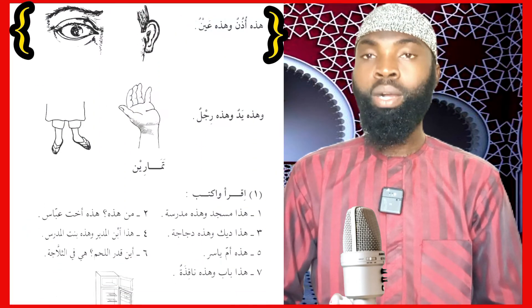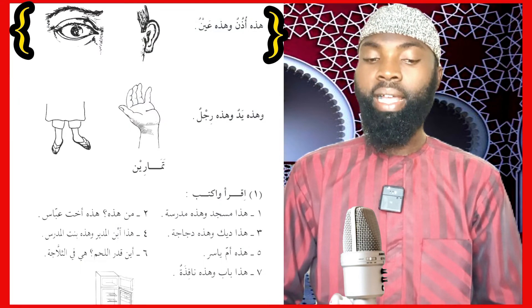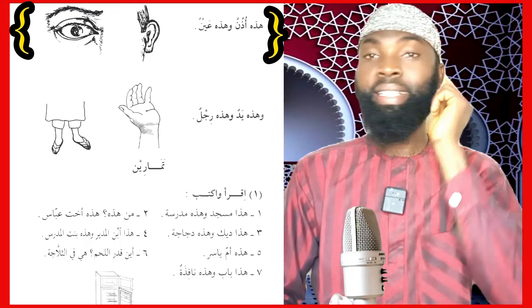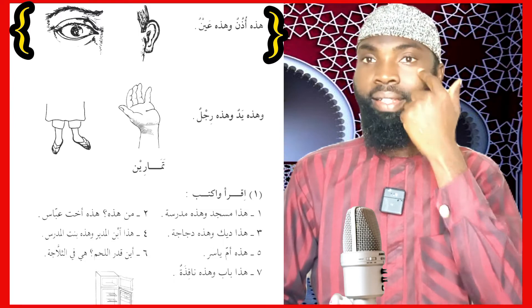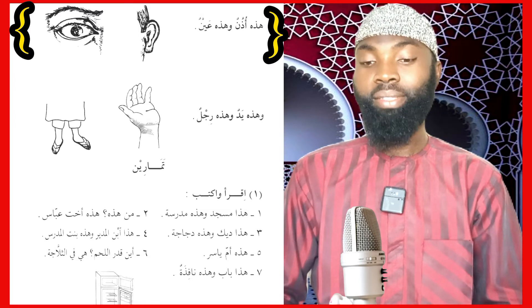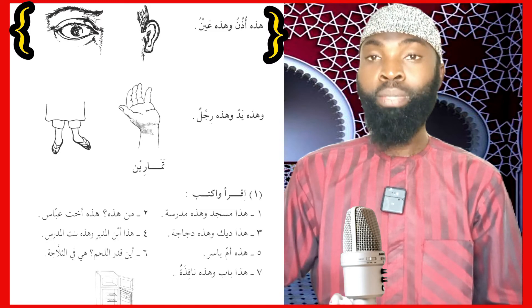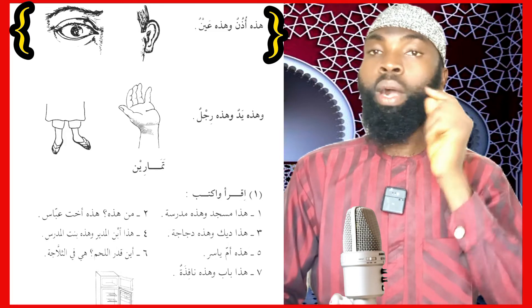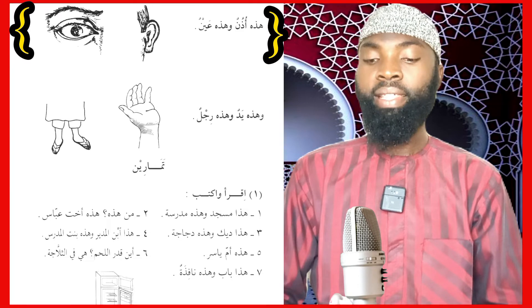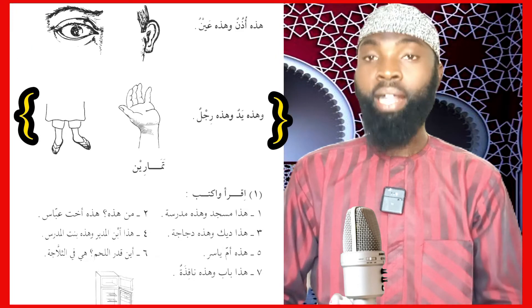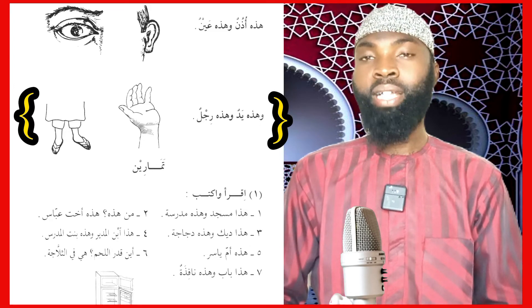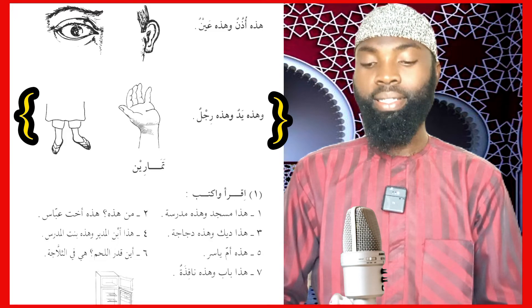هَذِهِ أُذُنٌ وَهَذِهِ عَيْنٌ — this is an ear and this is an eye. Since we have two ears and two eyes, these paired parts of the body are considered feminine words, so we use هَذِهِ. هَذِهِ يَدٌ — this is a hand. وَهَذِهِ رِجْلٌ — and this is a leg. We have two hands and two legs, therefore they are also counted as feminine words.